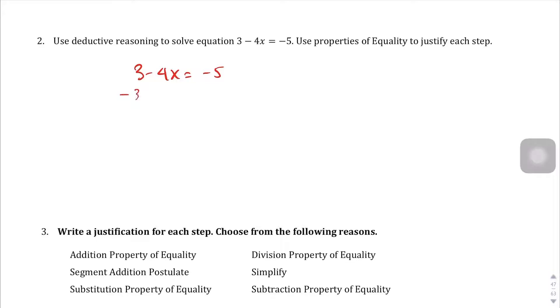Because of what I did right here, this is the subtraction property of equality, since we subtracted 3 from both sides. And then we're going to divide by negative 4 to get 2, and since we divided, this is the division property of equality.